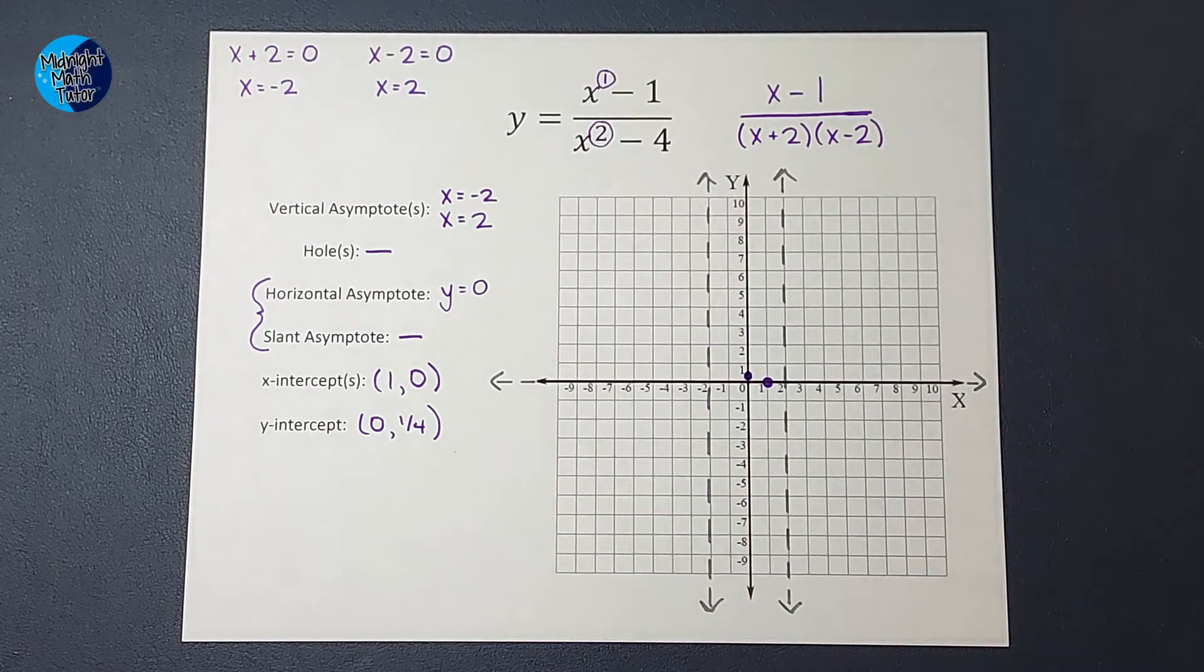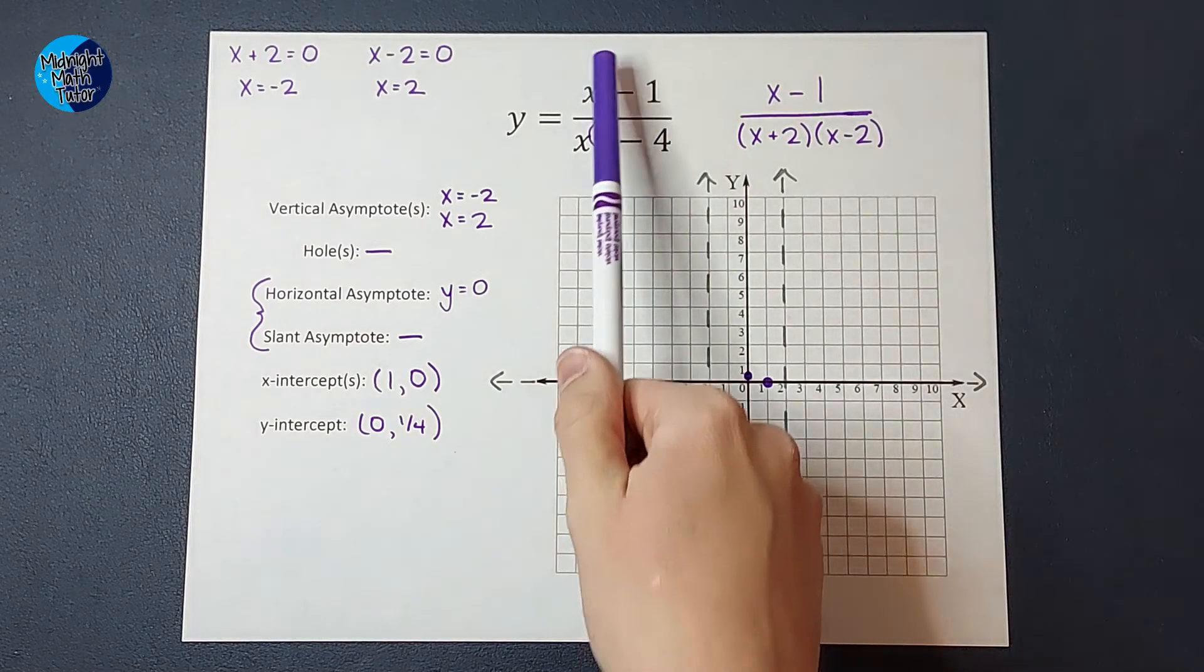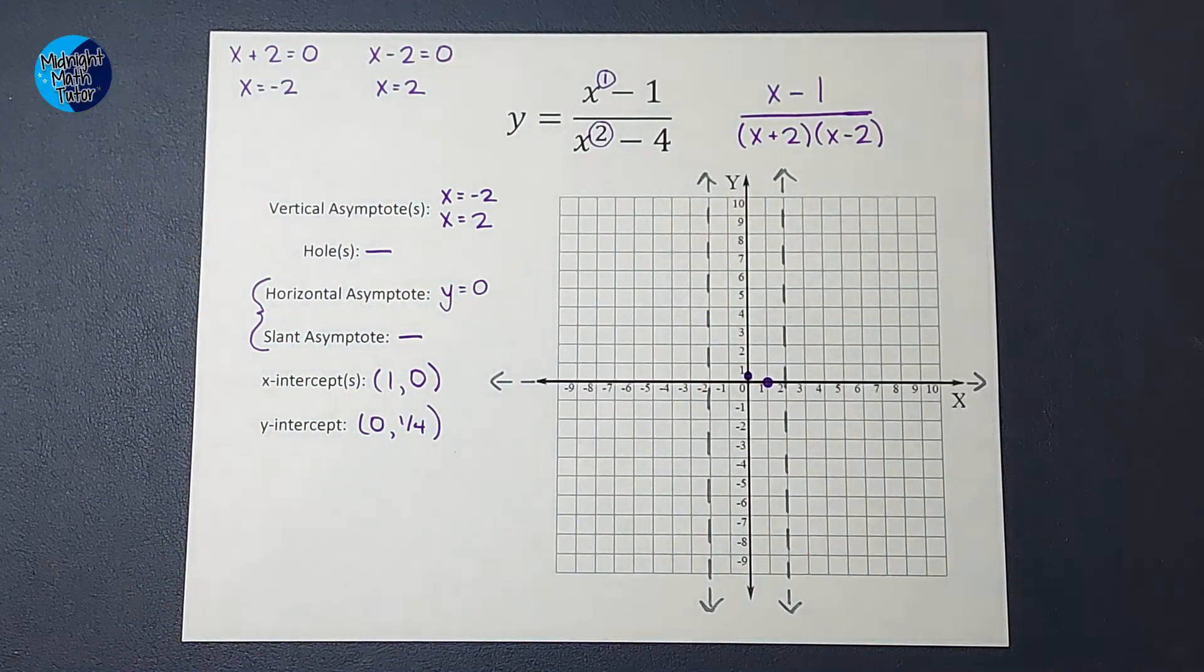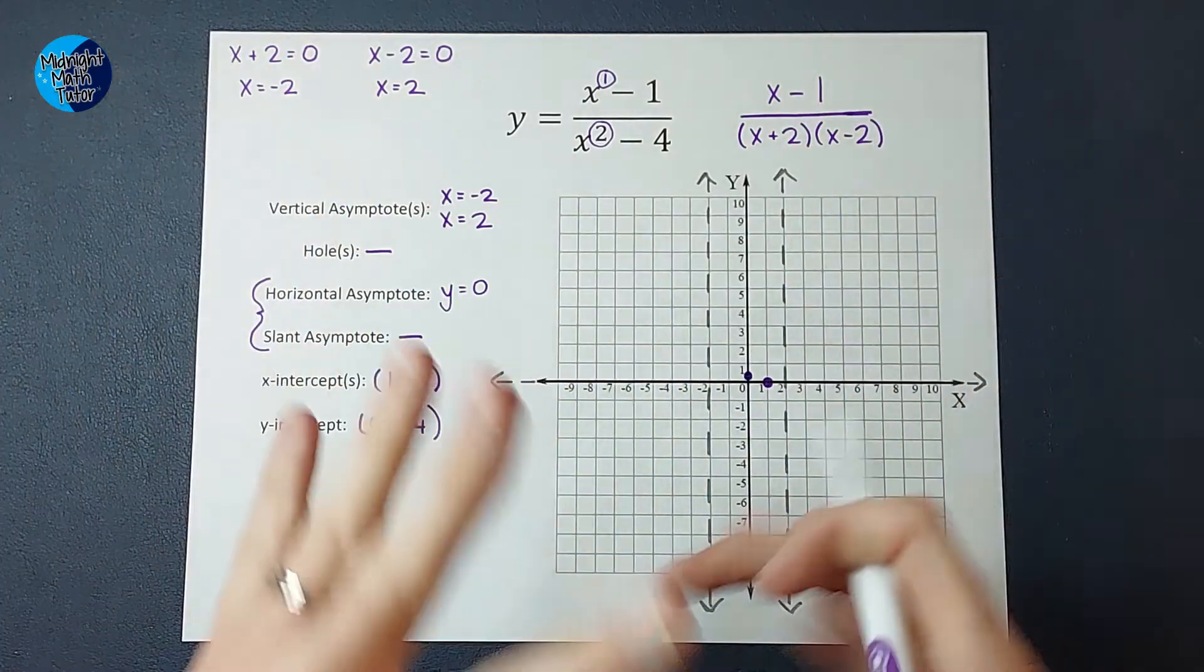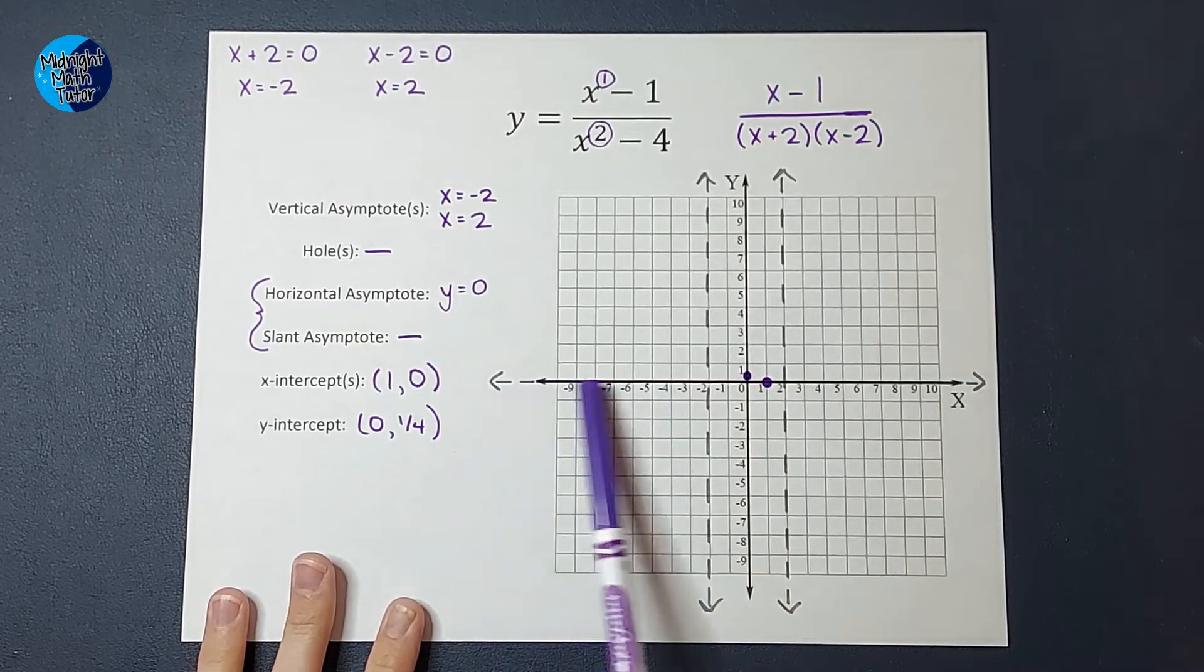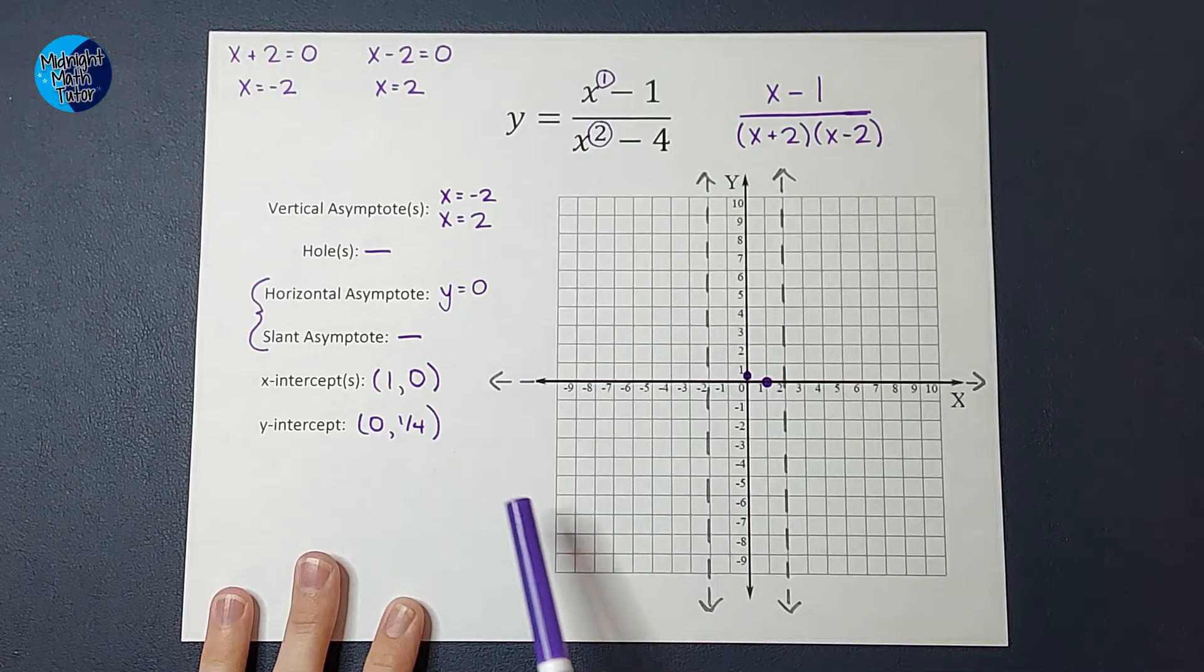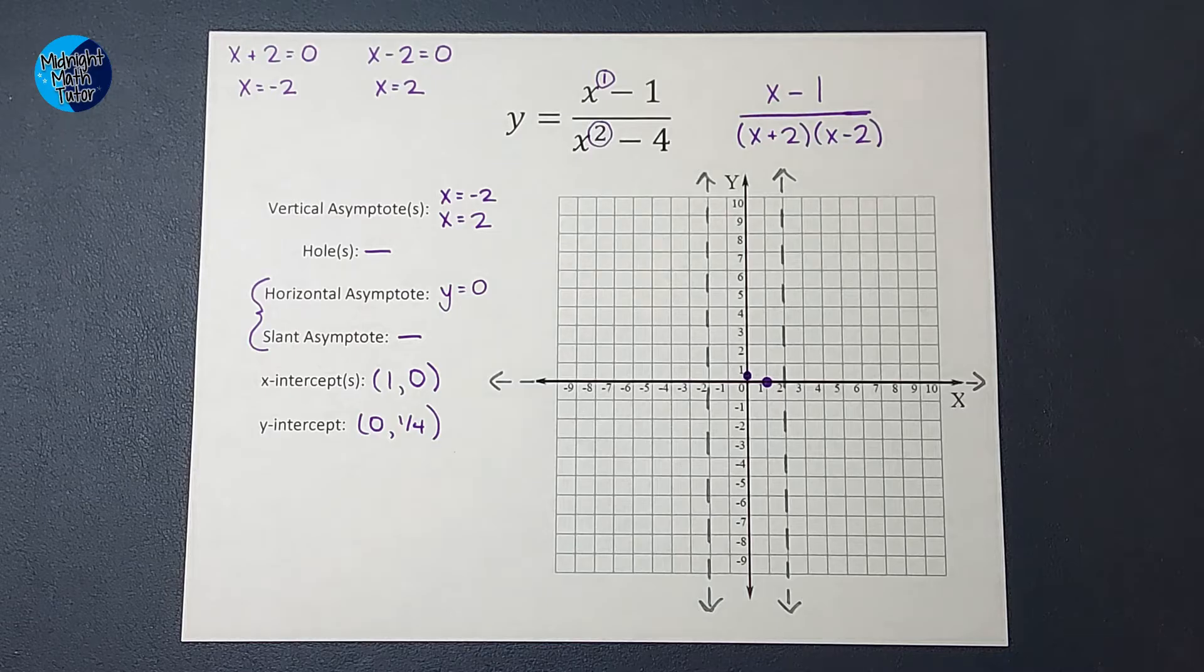So, first option is we can just pick a point like negative 4 or negative 10, plug it in for x, get a y, and get that ordered pair and graph it, right? Another option that we can do with this graph, it may not work every single time, but for this graph we can, is I really just need to know if when I plug in these numbers, am I going to get a positive number or a negative number, right? And that'll tell me what my graph looks like. So, let's go ahead and try this out. I'm just going to pick negative 10, right? This is called sign analysis.